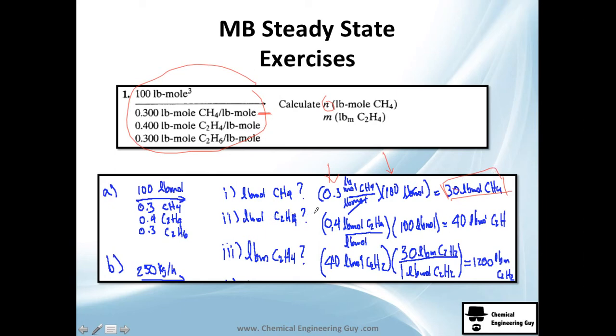Now they ask you to calculate the mass, not moles, but mass of C2H4. We need to calculate first the moles: 0.4 times 100, you get 40 pound mole C2H4. Now we change moles to mass. We multiply by the molecular weight, which is 30 pounds per pound mole, and you get 1200 pounds of C2H4.